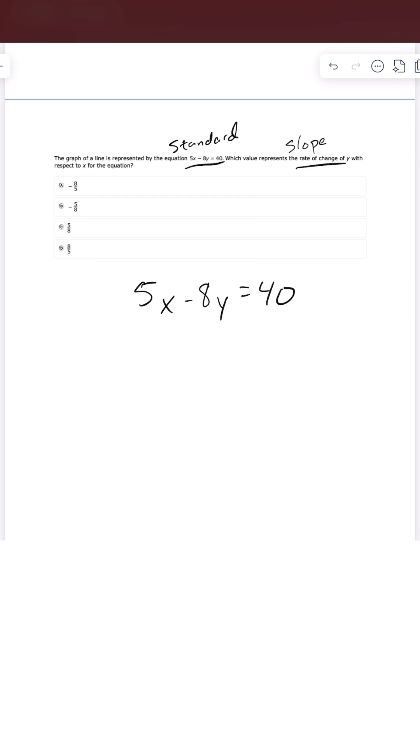So first of all, I'm going to get this 5x to the other side. And so I'm going to subtract 5x from both sides. It's going to cancel out over here. And that's going to leave me with negative 8y is equal to negative 5x plus 40 because it's positive 40.